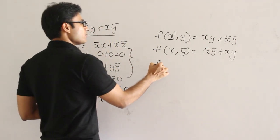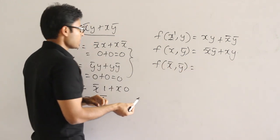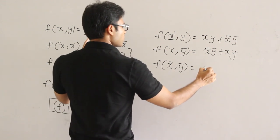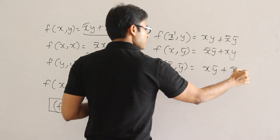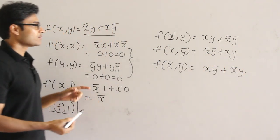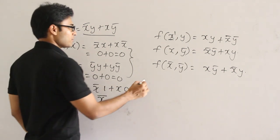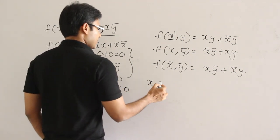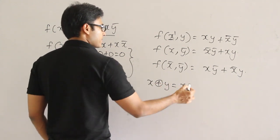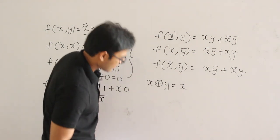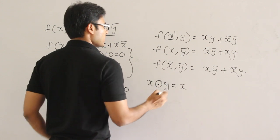Maybe you could think about substituting both x' and y' in the function. If you do that, what you get is x·y' plus x'·y, which is nothing but x XOR y. So we found out another property: the complement of XOR gives XOR again — exclusive NOR of x and y equals x XOR y under this manipulation.